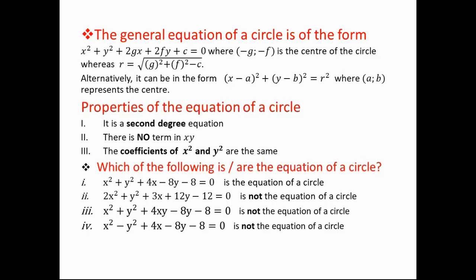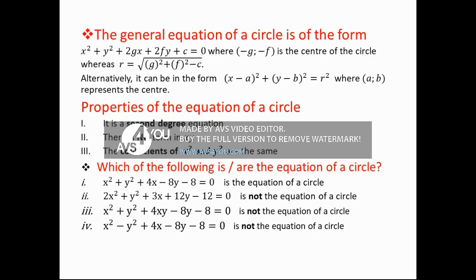When you see an equation of a circle, how will you know it is one? It must satisfy three properties. First, it must be a second-degree equation — the highest power must be two. If the power is more or less than two, it is not a circle equation. Second, there must be no product or multiplication of x and y in the equation — that must never happen.